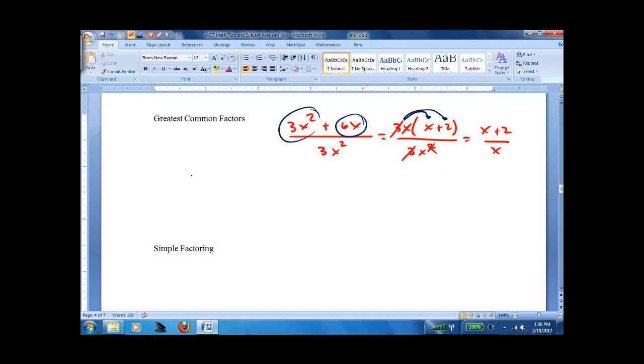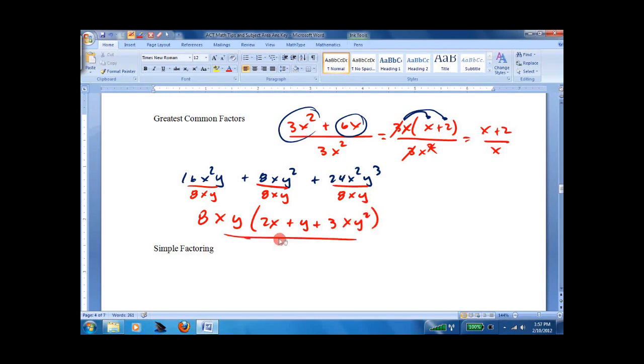We'll also say things, what's the greatest common factor of these three terms? And what you have to do is say, what's in all three terms? It looks like there's an 8, it looks like there's an x, it looks like there's a y. And if you divided each one by that, you can see what's left. So that's greatest common factors.